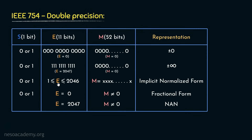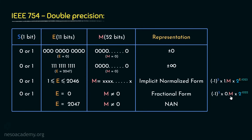Except those cases, if the exponent ranges from 1 to 2046, whatever we have in the 52-bit mantissa portion will be represented using implicit normalized form, decoded using the formula: minus 1 raised to the power s, multiplied by 1. followed by the 52-bit mantissa, multiplied by 2 raised to the power of e minus 1023, because for an 11-bit exponent the bias is 1023. For the fractional form, the formula is: minus 1 raised to the power s, multiplied by 0. followed by the 52-bit mantissa, multiplied by 2 raised to the power of minus 1022, which is the lowest value in the range of exponents.